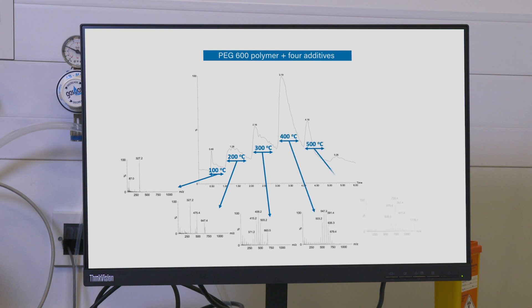Typically, smaller, lower mass species appear at lower temperatures, and larger, heavier mass species appear at higher temperatures. This allows a degree of separation and deconvolution of complex samples.